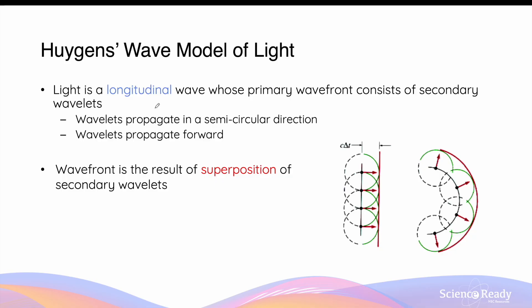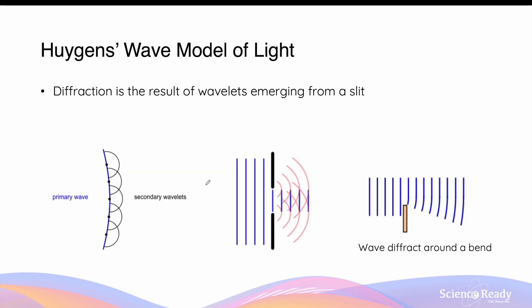The effect of diffraction can be easily understood using Huygens' model of light, which describes light as a longitudinal wave whose primary wavefront consists of secondary wavelets. He stated that these wavelets will propagate forward in a semicircular direction. When these wavelets superimpose, they will form the primary wavelet. Huygens explained that when a wave such as light passes through a small slit, only some of the wavelets will be able to pass through. The new wavefront will appear to have scattered due to the superposition of the wavelets that managed to emerge out of the slit.